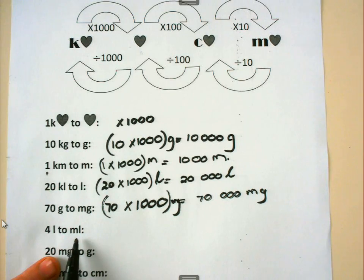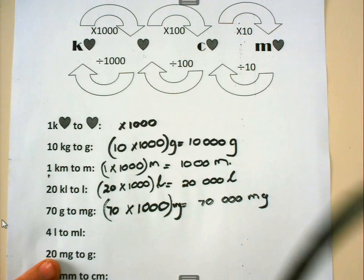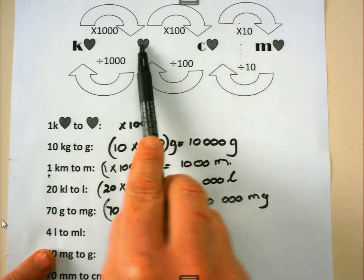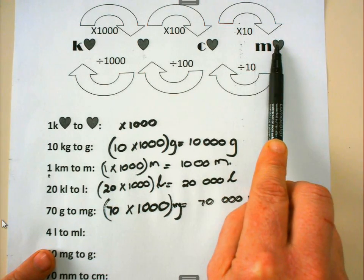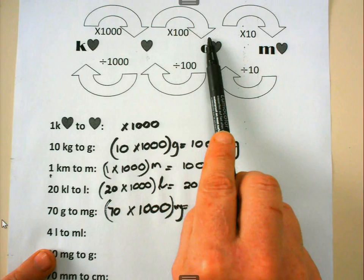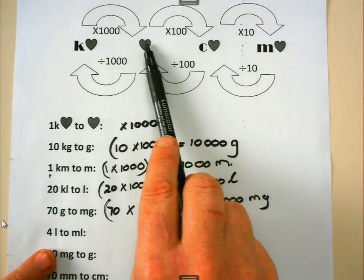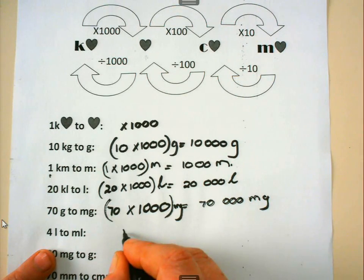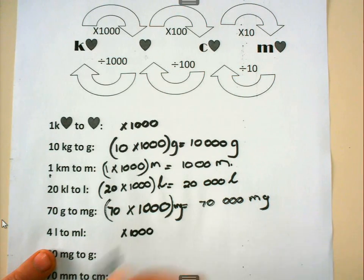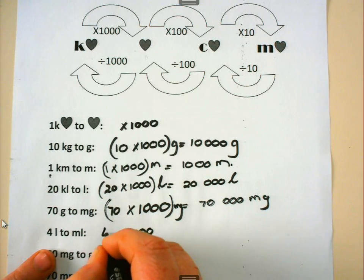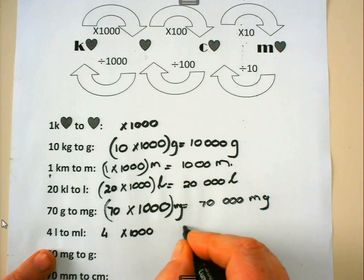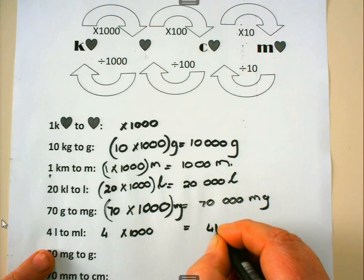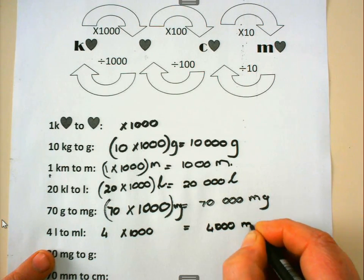4 liter to milliliter. Liter is the base unit and I'm going from liter to milliliter, again moving over two spaces. I multiply by 100 and another 10, which is the same as multiplying by 1000. So 4 times 1000 gives 4000 milliliter.